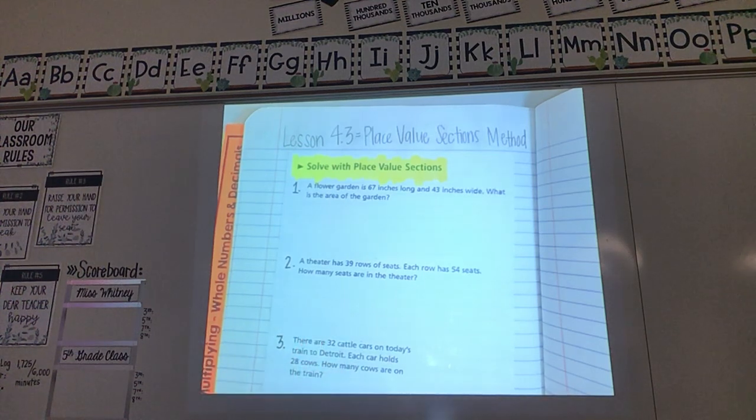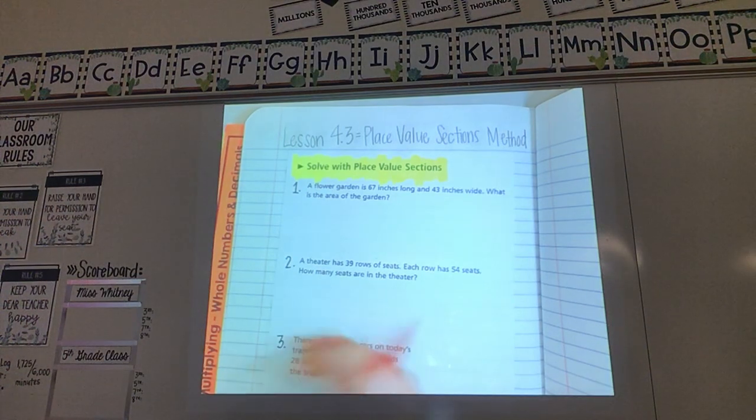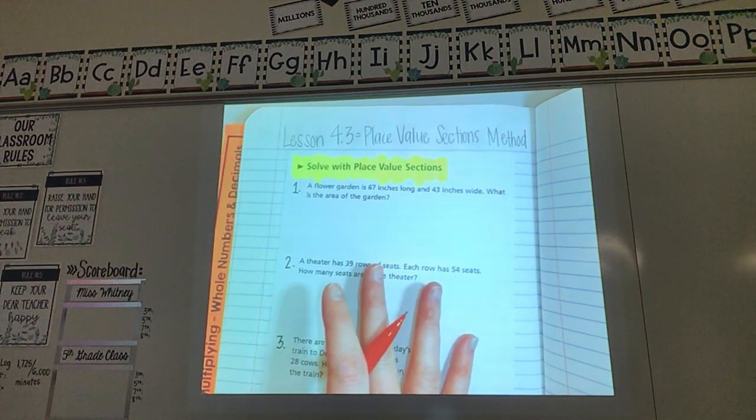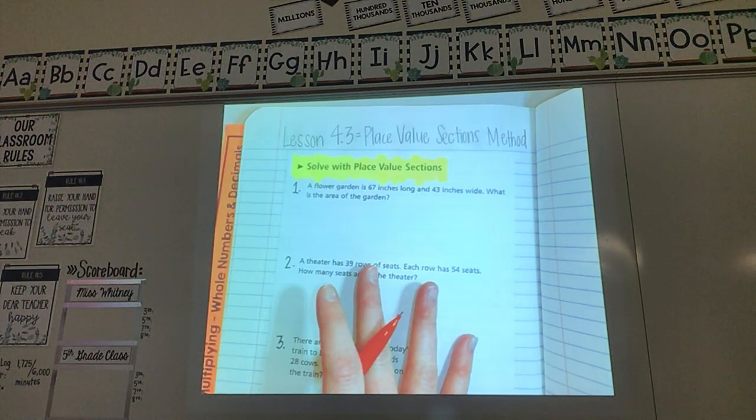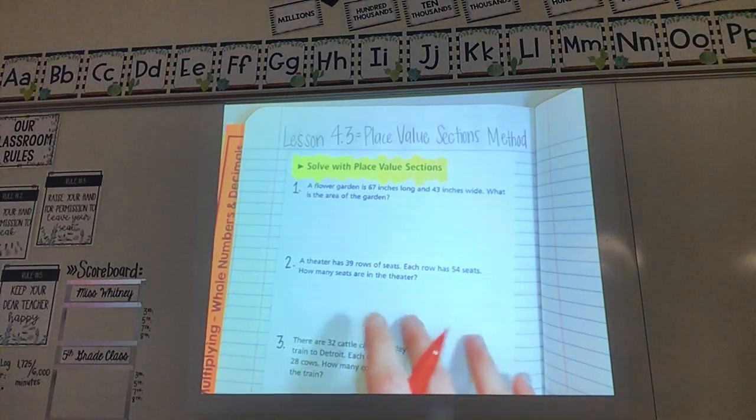So today we have to use the place value sections method when we're multiplying. I know you know how to do the shortcut method and several ways to multiply and some of you are very good at it already. However today you must use the place value sections method which we're gonna do in our notes. So exactly how we do it in our notes you have to do it like that on your assignment.